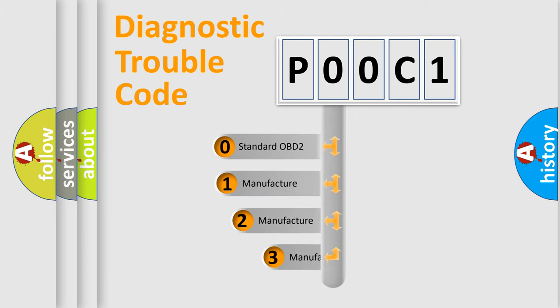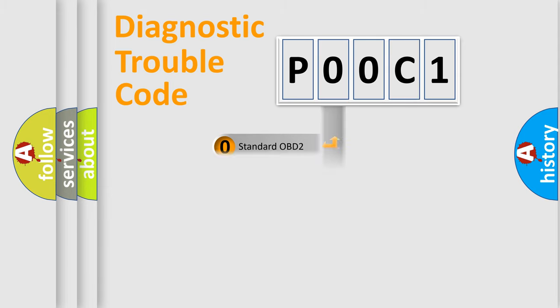If the second character is expressed as zero, it is a standardized error. In the case of numbers 1, 2, 3, it is a more prestigious expression of the car specific error.